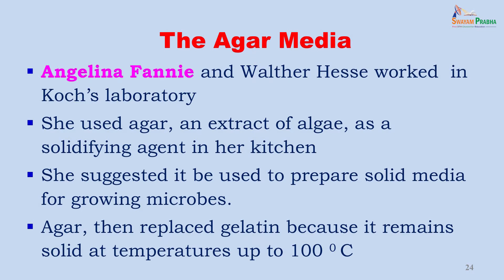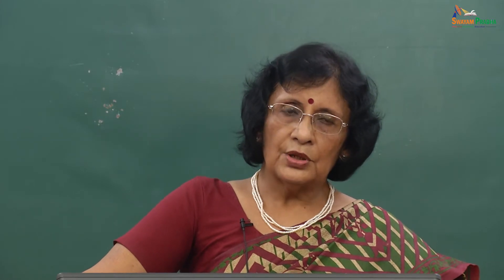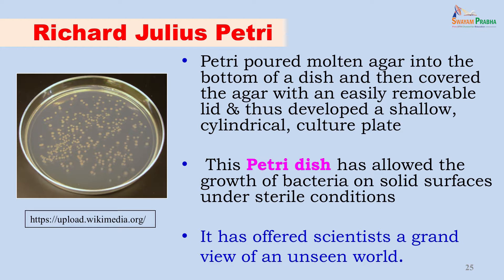Further progress in studying microorganisms required other developments. Angelina Fanny and Walter Hess worked in Robert Koch's laboratory. Angelina Fanny used an extract of algae as a solidifying agent in her kitchen and suggested it be used to prepare solid media for growing microbes. Previously, gelatin was used but would liquefy at 100 degrees centigrade, preventing pure colony growth. Once agar was introduced, organisms could grow on the surface of the medium and be studied better. Richard Julius Petri, an army physician, then created the Petri dish — a glass dish in which agar was poured with a loose-fitting lid on top, still used in microbiology laboratories today.